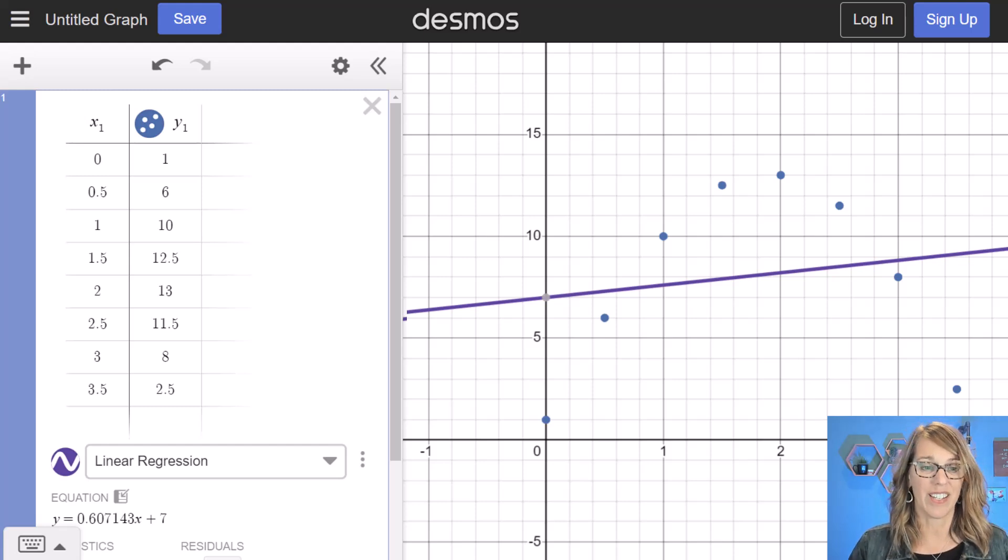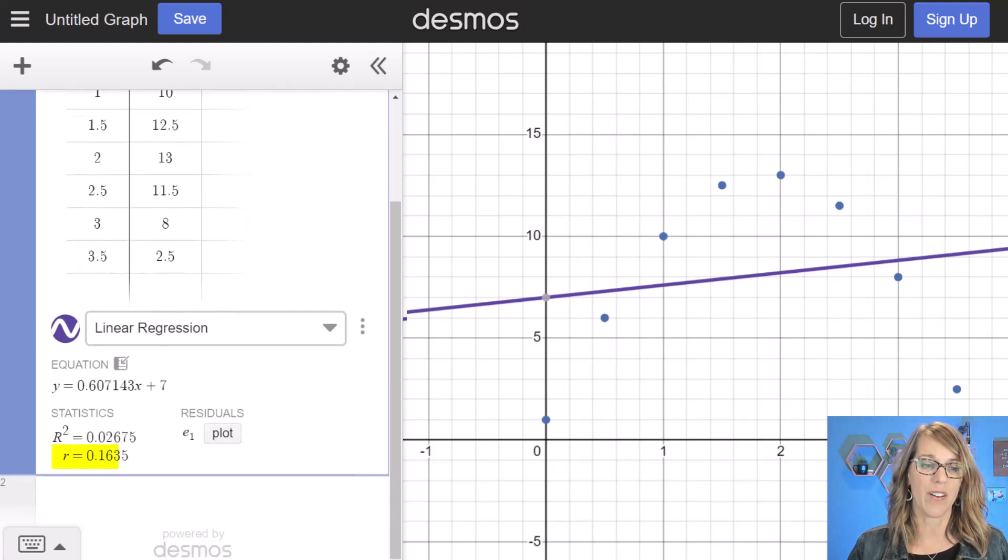Well, it's definitely not linear. And if I scroll down, I can see that my R value is only there at 0.1635. We'd want it to be at either a negative one or a positive one. We're nowhere near either.